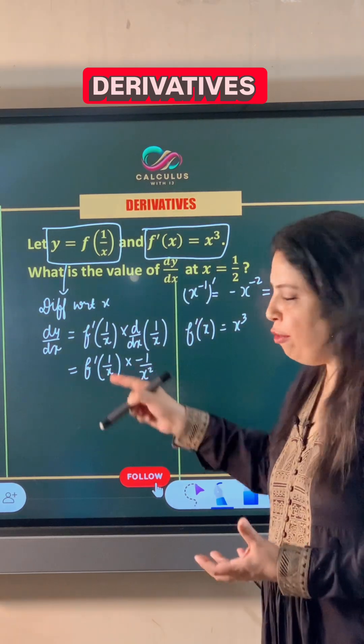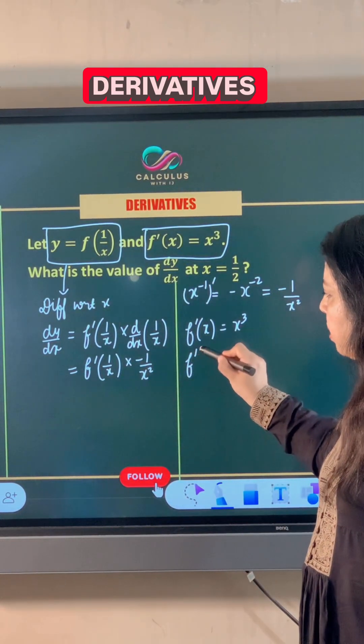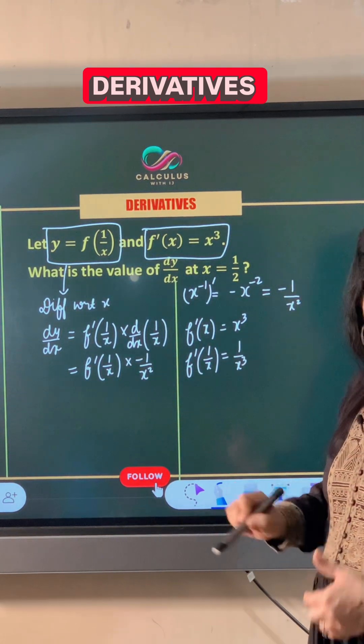Now we have f dash of 1/x. So if we replace this x by 1 upon x here, we also get 1 upon x cubed.